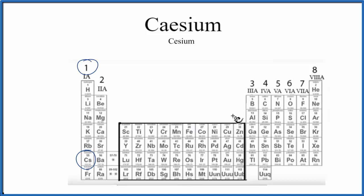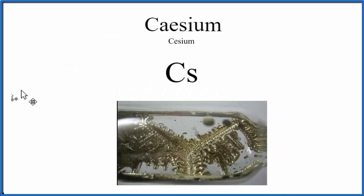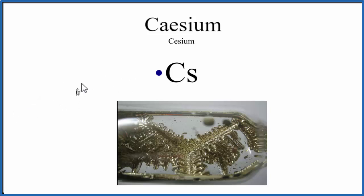So back to our structure. We'll take that one valence electron, represent it by a dot, and put it right here in front of cesium. That's the Lewis structure for the element cesium.